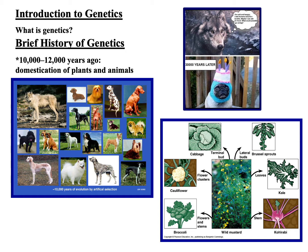Now that we have that basic definition of genetics, what I'd like to do is talk a little bit about the historical perspective — a brief history of genetics. In the diagrams on this figure, the one on the left has a picture of several different breeds of domesticated dog, and the one on the right shows several different strains or varieties of wild mustard. I'll address each of these figures in just a minute.